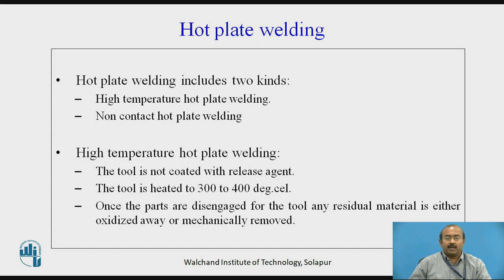In high temperature hot plate welding, the tool is not coated with a release agent. The tool is heated to 300 to 400 degrees Celsius. Once the parts are disengaged from the tool, any residual material is either oxidized away or mechanically removed.